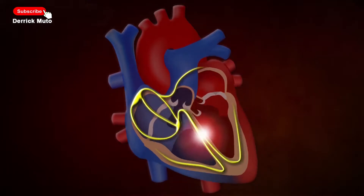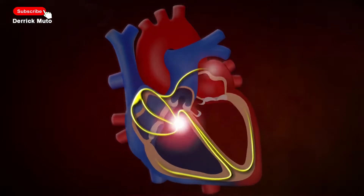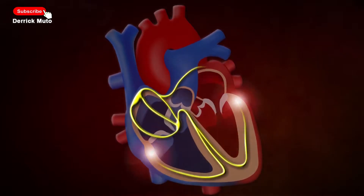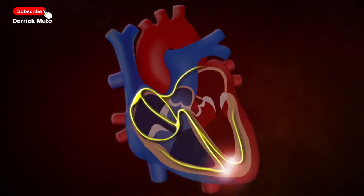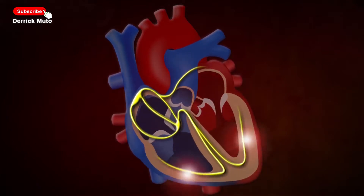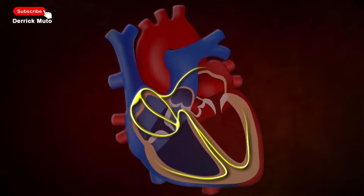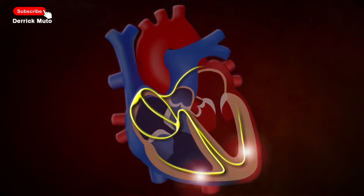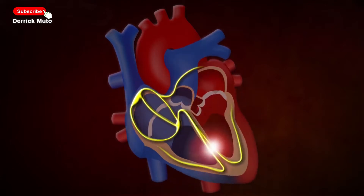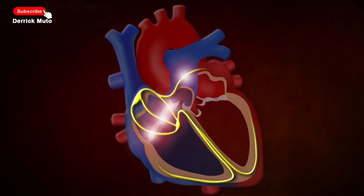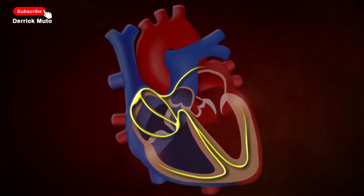The impulse is then passed into the bundle of His, which conducts the impulses through the septum. The impulse eventually reaches the Purkinje fibers, which transmit the impulses to the ventricles. This causes ventricular systole, pushing blood out of the heart. Thank you for watching and don't forget to subscribe.